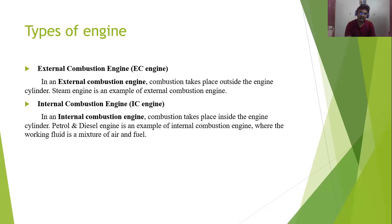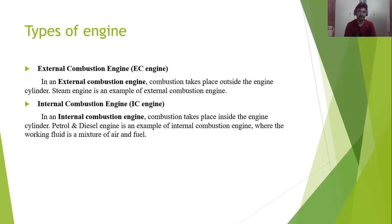In the external combustion engine, the fuel is burned in a separate external chamber. The steam from combustion comes through a tube into the cylinder, where the piston is moved to and fro by the pressure of the steam. That is the external combustion engine. In the internal combustion engine, combustion takes place inside the engine cylinder. Petrol and diesel engines are the best examples of IC engines, while the steam engine is the best example of an EC engine.